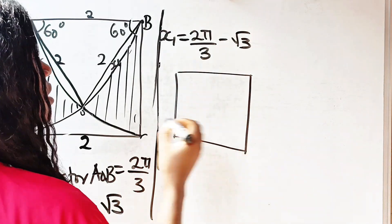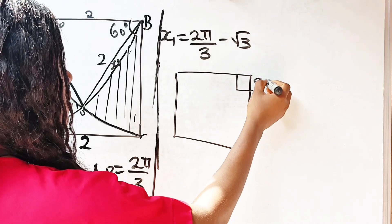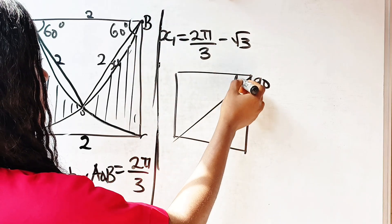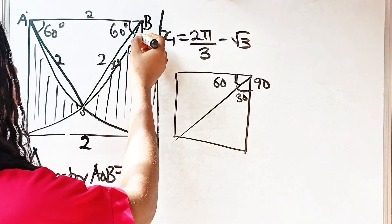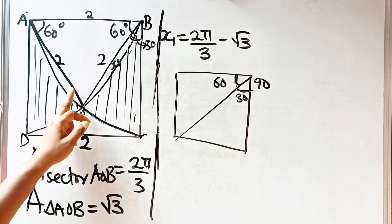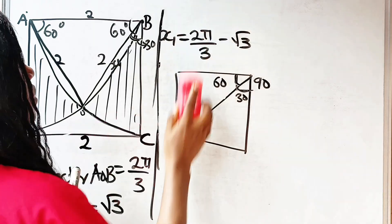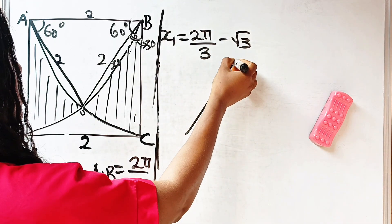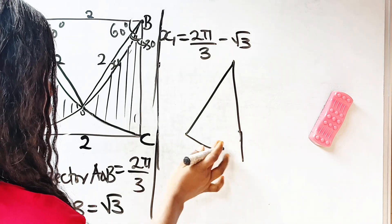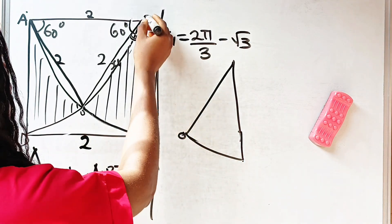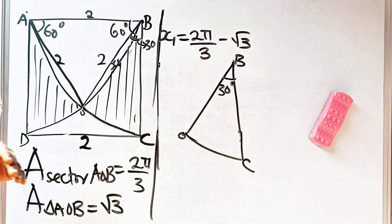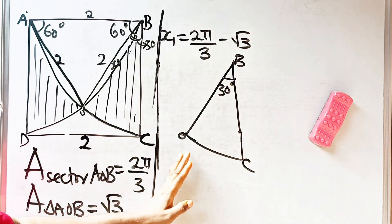Remember this is a square, so the whole corner is 90 degrees. We've already taken part of it — that part is 60 degrees — meaning the remaining part is 30 degrees. So from here to here is 30 degrees, and if you look at that we have another sector there. This is O, this is B, and this is C, and here is 30 degrees.